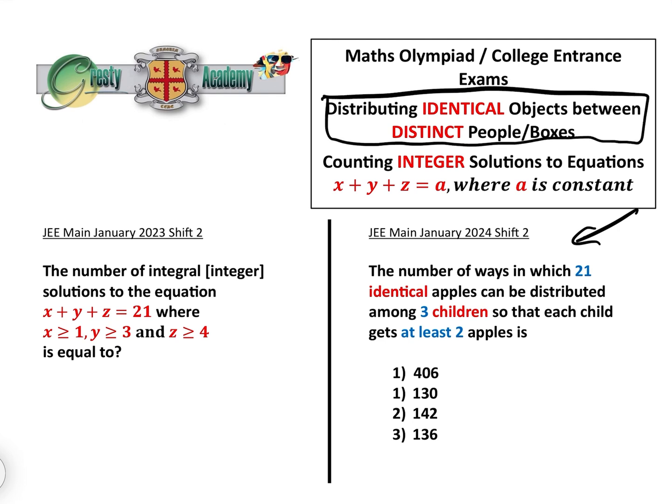What some people may not realize is that counting integer solutions to equations x plus y plus z equals a is identical. This question here, which is the one we're going to do today from the JEE Main January 2023, is identical to that. So what we're going to do is just a very brief recap.